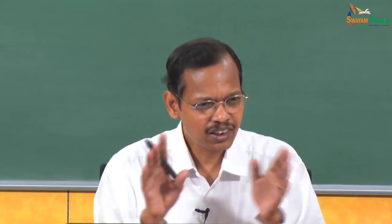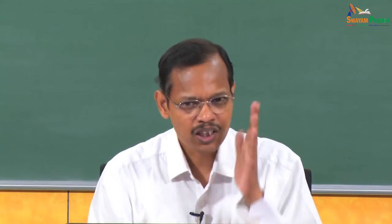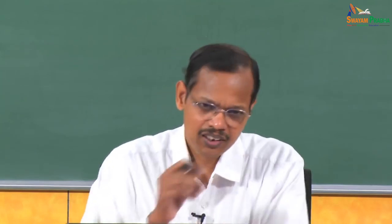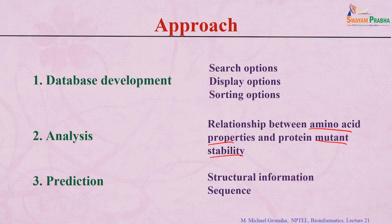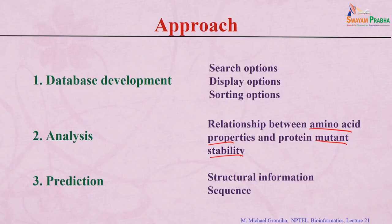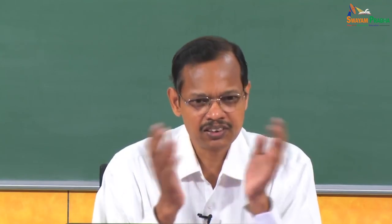Once the database is ready, you can use it for analysis — analyzing which residues are stabilizing or destabilizing, what factors are important for stability, and whether there are relationships between amino acid properties and stability upon mutation. Once you relate properties and stability, it becomes possible to develop models to predict stability upon mutation for unknown data. These are three different aspects: developing a database, analyzing data, and developing predictive models.